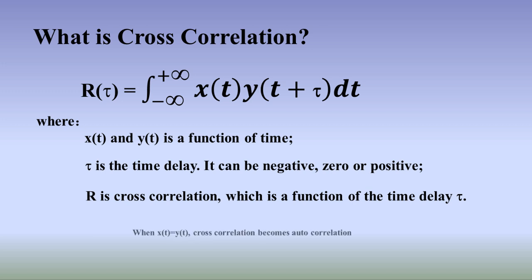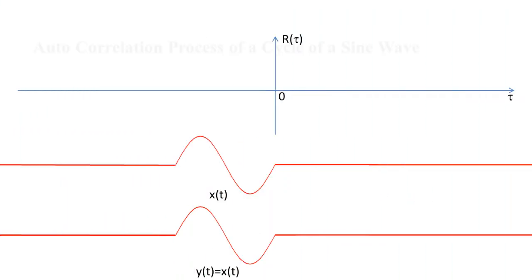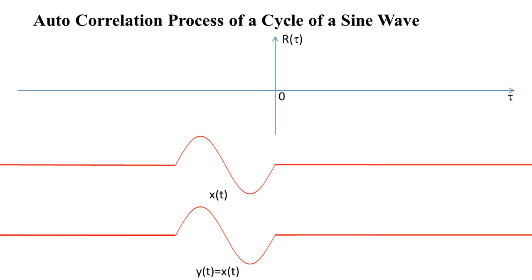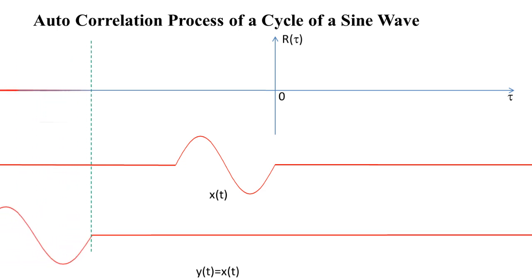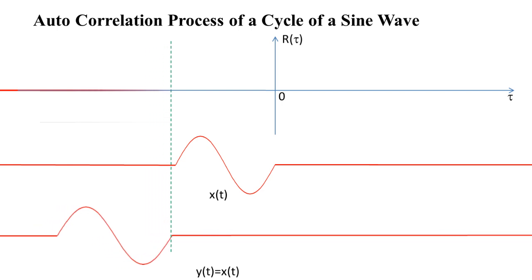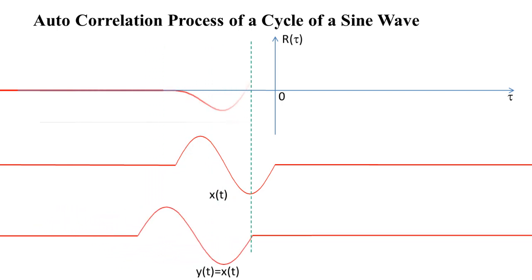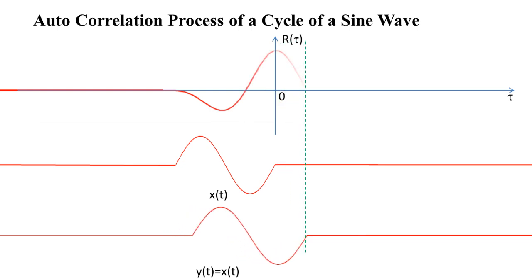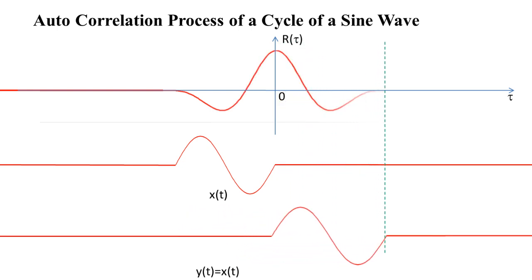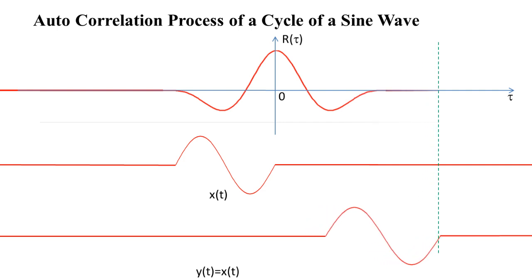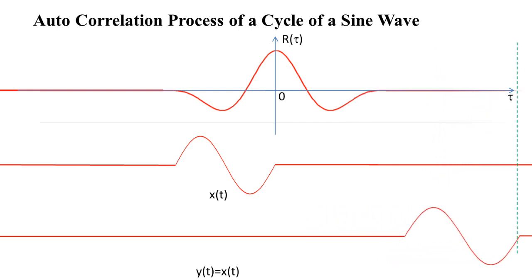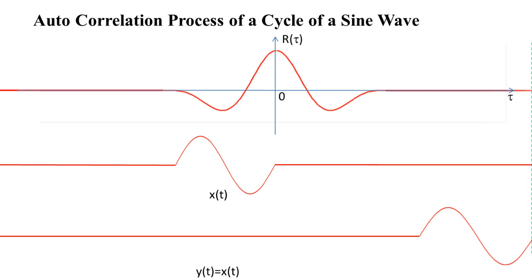When x equals y, the cross-correlation becomes autocorrelation. This animation shows the autocorrelation process of a cycle of a sine wave. As you can see, the peak of the autocorrelation function is reached when the time delay tau is zero — that is, when the two sine waves are aligned precisely with each other on the time axis. This autocorrelation function has only one peak and two troughs.